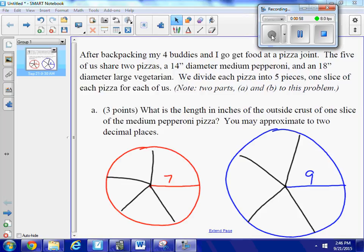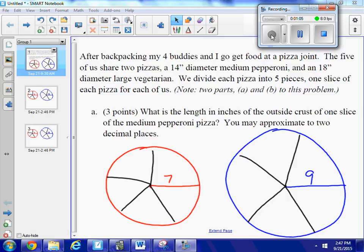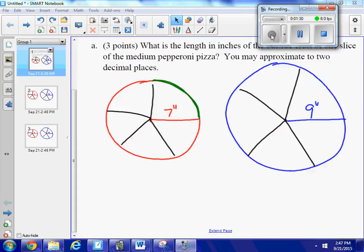So I got two pizzas divided into five pieces each. Each person gets a slice. The first question is: what is the length in inches of the outside crust of one slice of the medium pepperoni pizza? So I'm only dealing here with the seven-inch radius pizza, not dealing here with the nine-inch radius pizza.